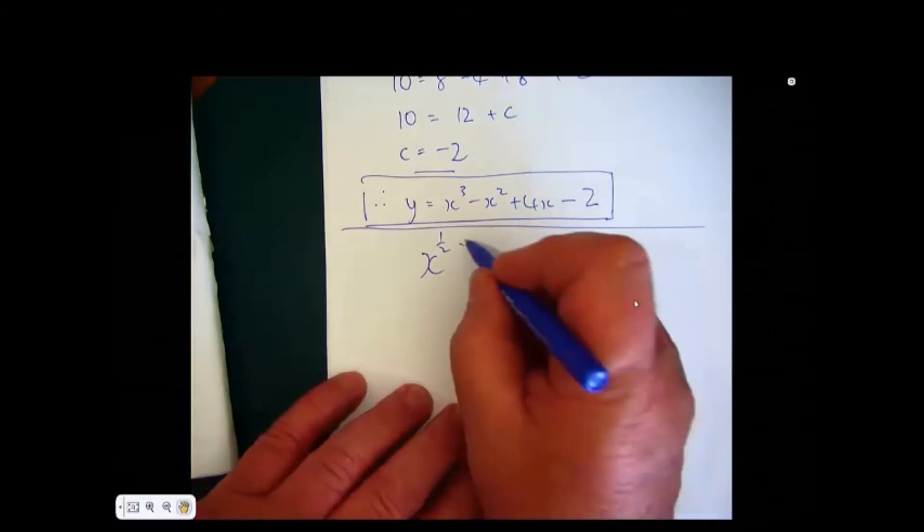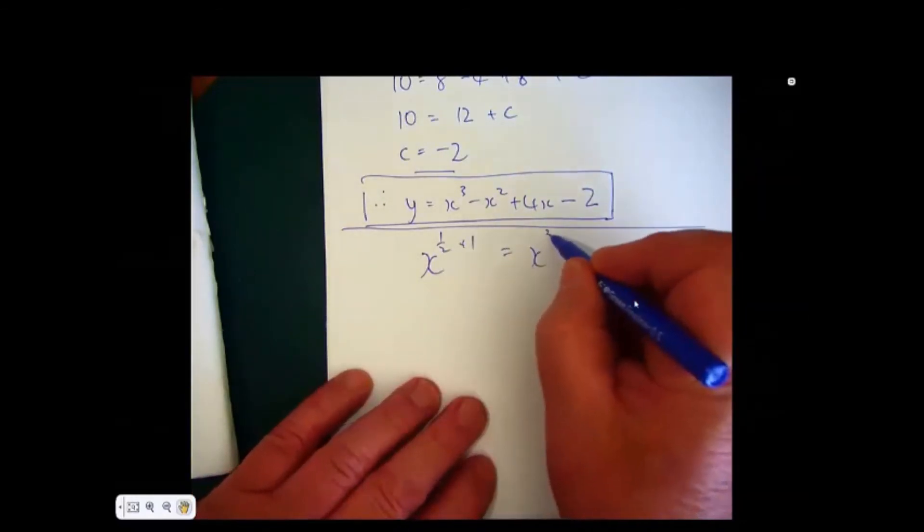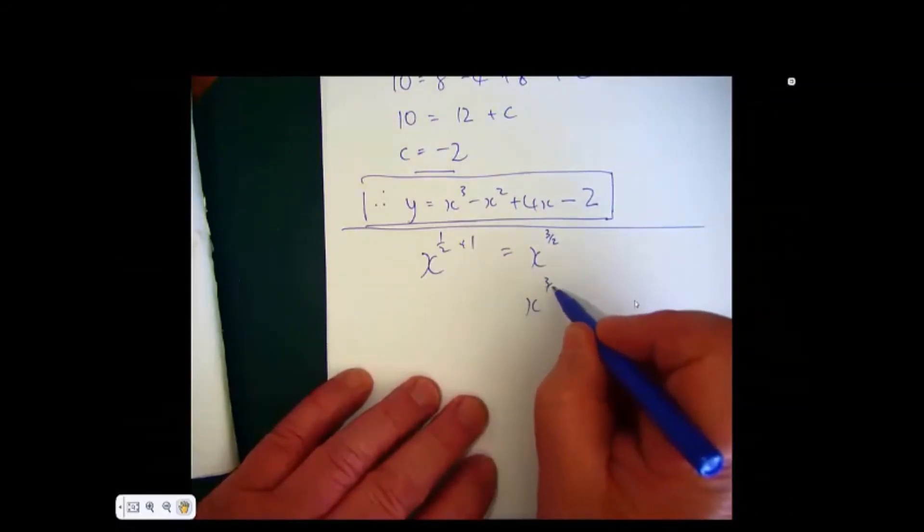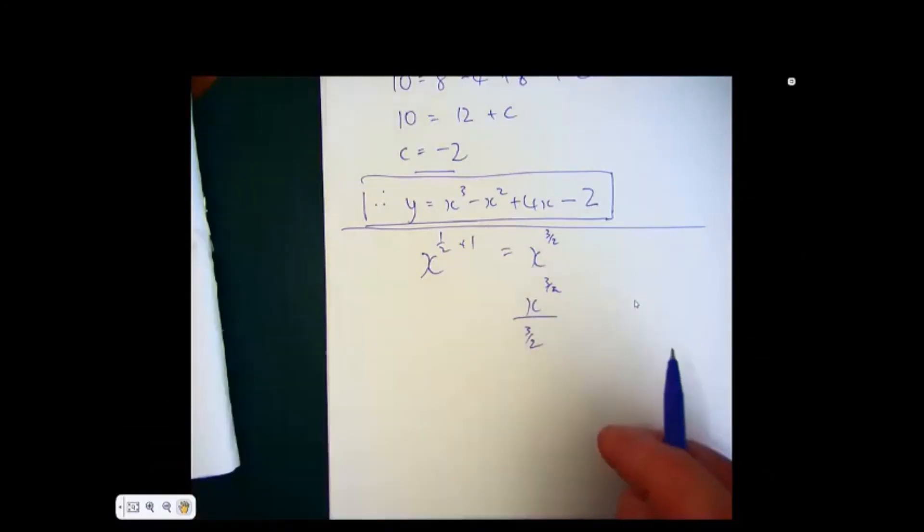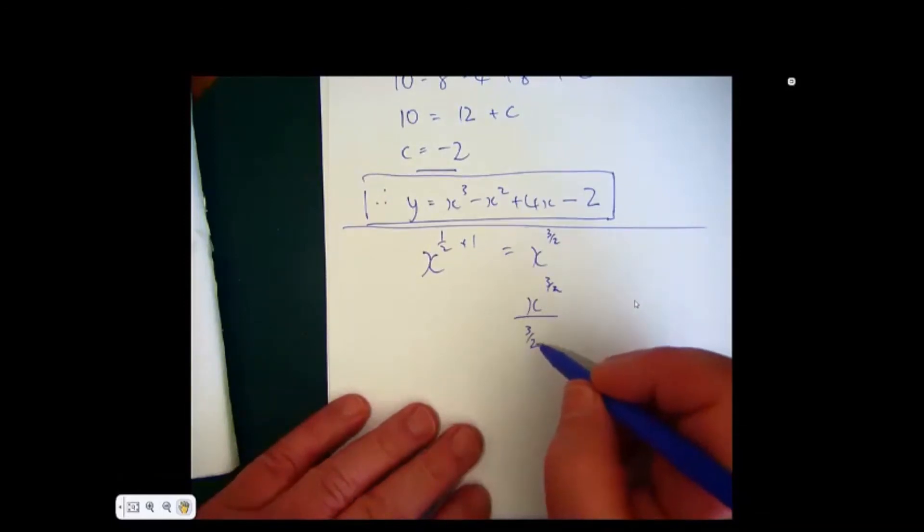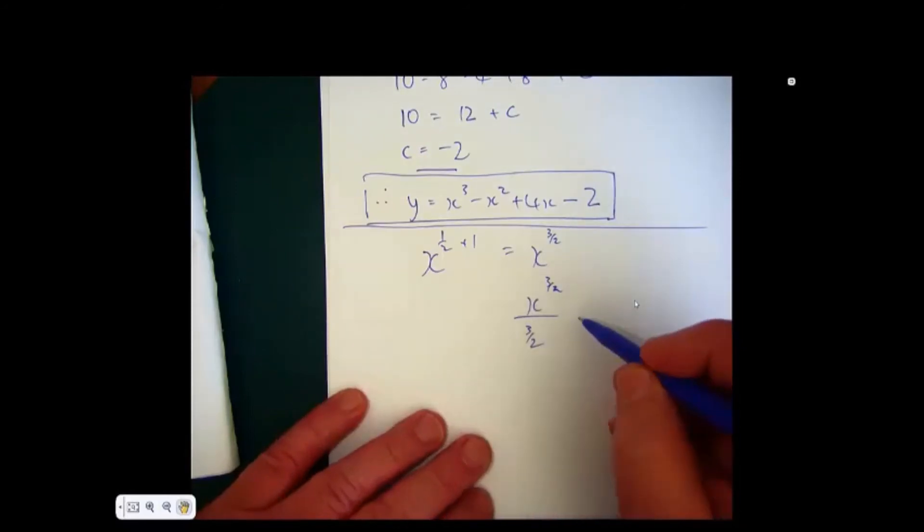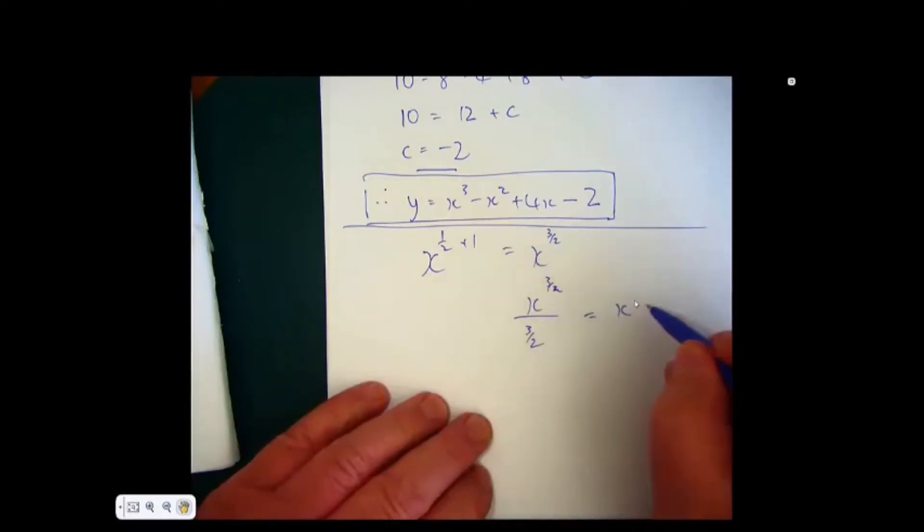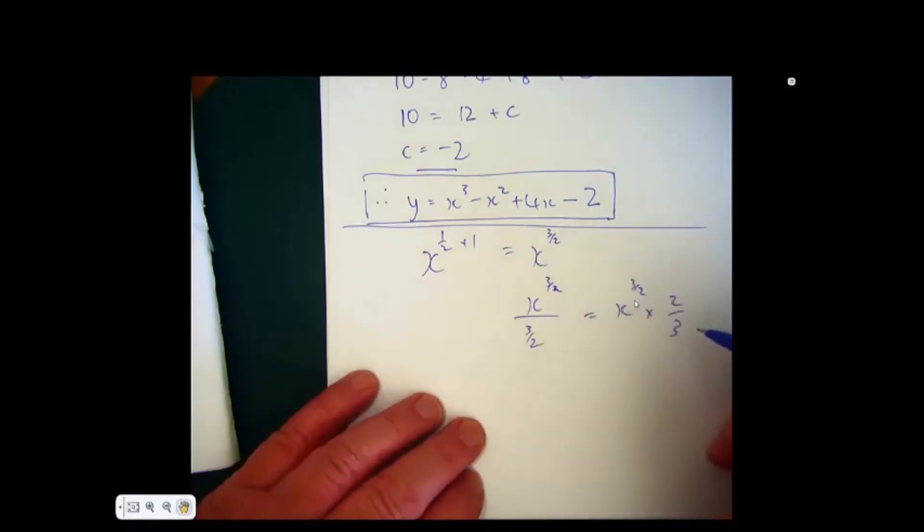We've got x to the half. I need to raise that by 1, so this becomes x to the 1 and a half, which is 3 over 2. But if I divide by the power, this then becomes x to the 3 over 2 divided by 3 over 2. So when you divide by the fraction, this in fact turns upside down. So this will become the same as x to the 3 over 2 multiplied by 2 over 3.